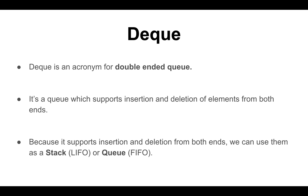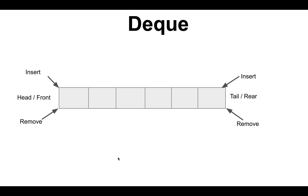for double-ended queue. It's a queue with support for insertion and deletion of elements from both ends. So if you imagine a queue where we can insert and remove elements from either the tail or the head — you can perform insertion from the tail and deletion from the head, which acts as a queue,